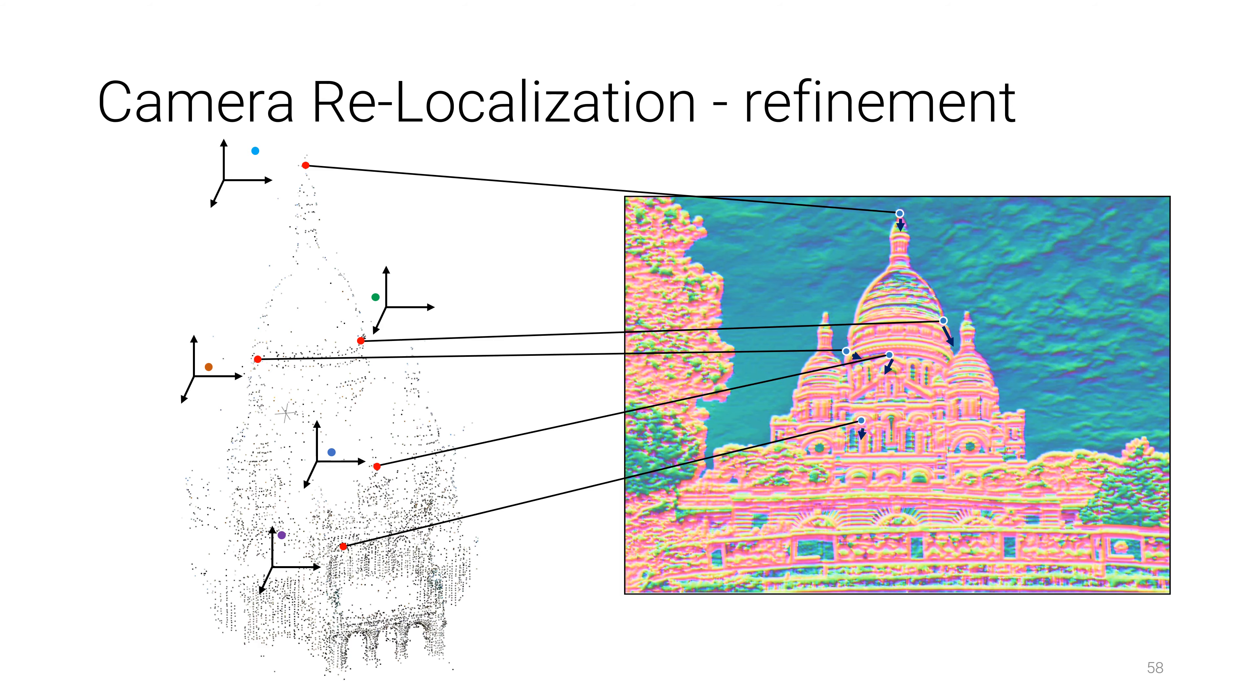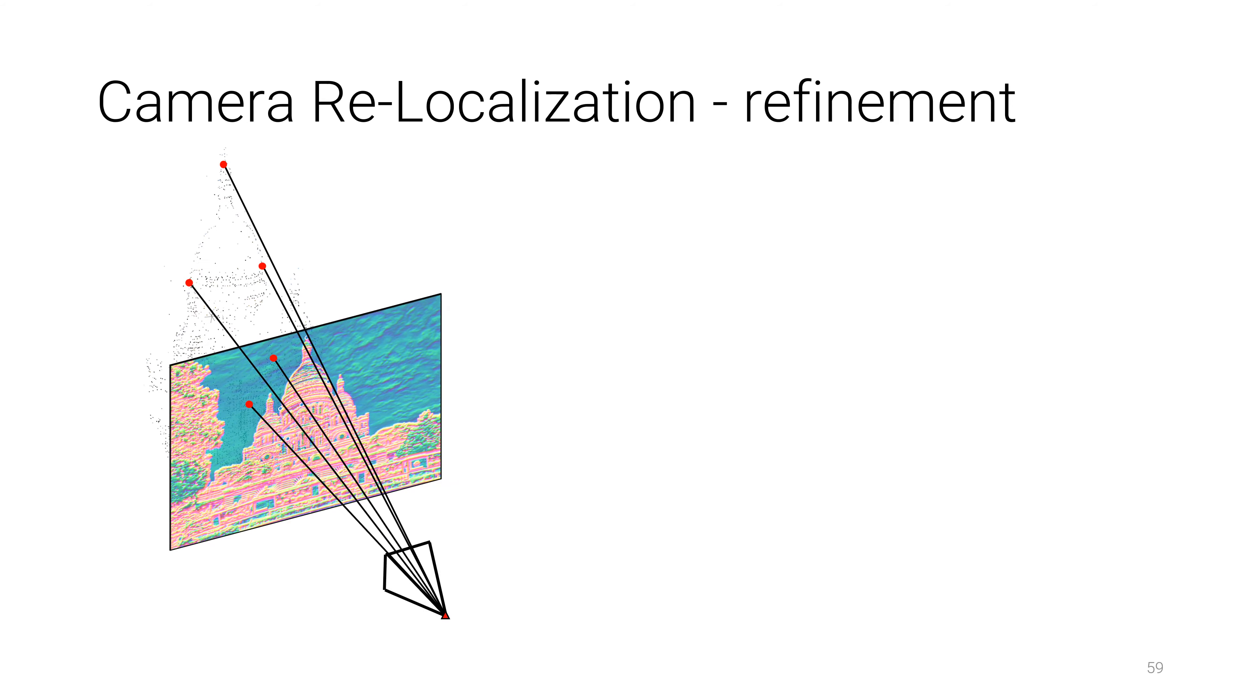The perspective-n-point algorithm is used to estimate a rough prior for the camera pose, which is again refined by aligning deep features.